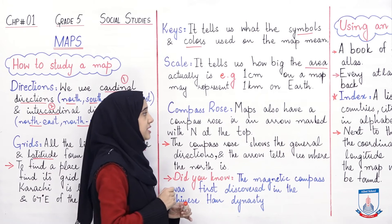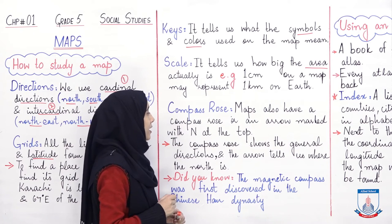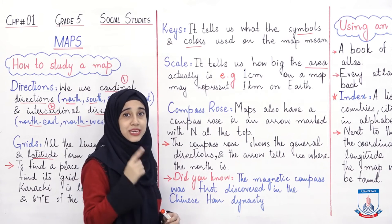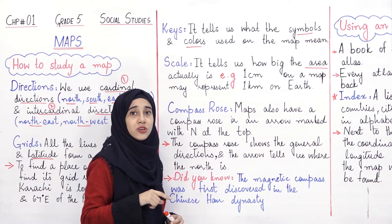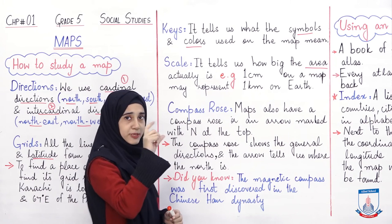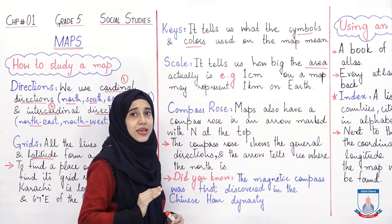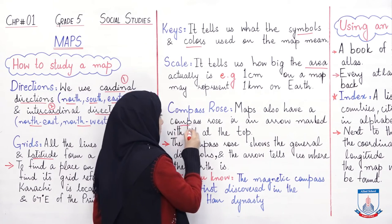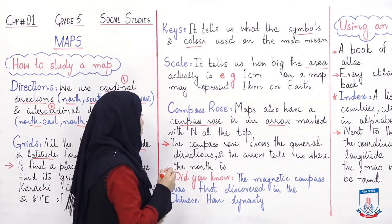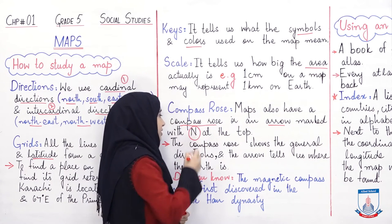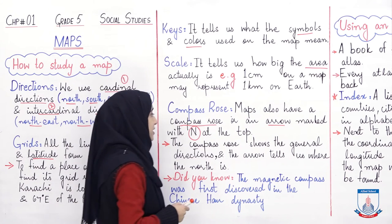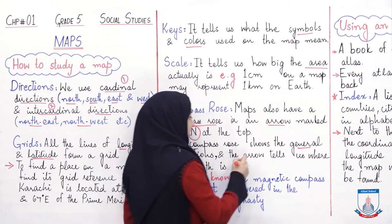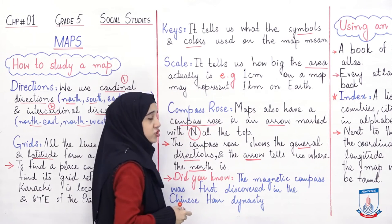Uske baad hum baat kar liethe hai compass rose ki. Maps also have a compass rose or an arrow marked with north at the top. Aapne aksar dekha hoga ke ek compass sa banawa hota hai — north, south, east, west — ye cardinal directions given hoti hai. Compass rose ek compass banawa hota hai map ke kisi ek kone mein, jisse aap ko pata lagta hai ke map ki north, south, east, west kuan si hai. Maps also have a compass rose, or an arrow marked with N at the top. N kya show kerta hai? It shows north. The compass rose shows the general directions and the arrow tells us where the north is.